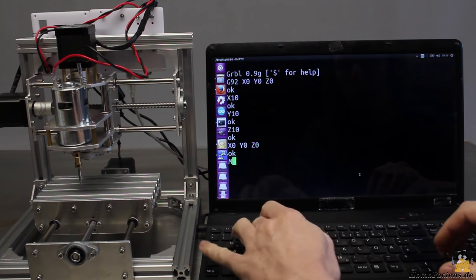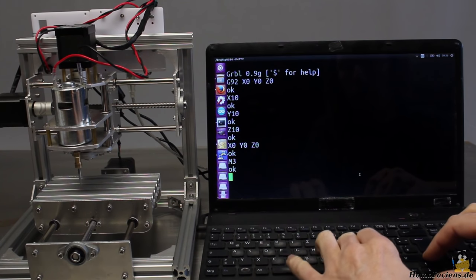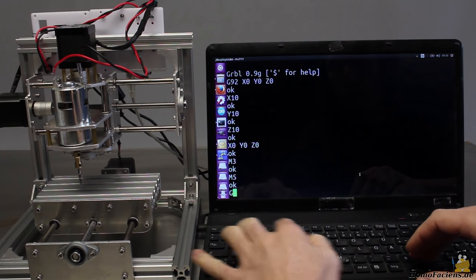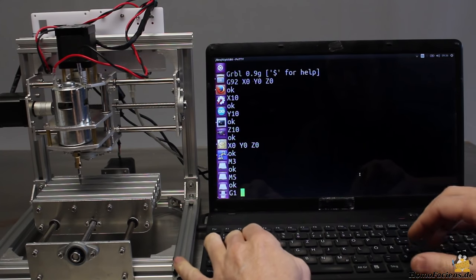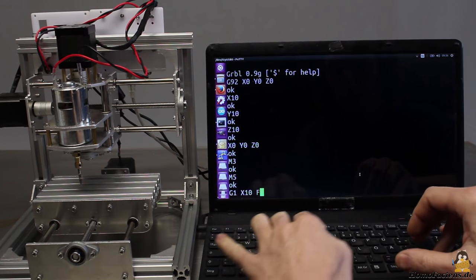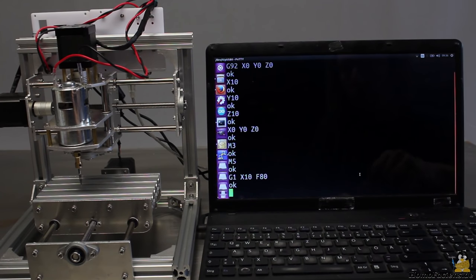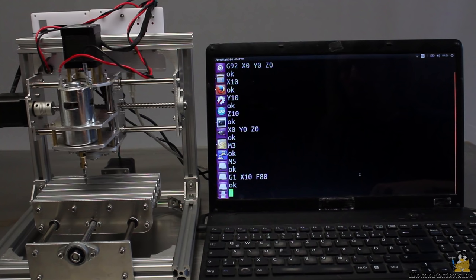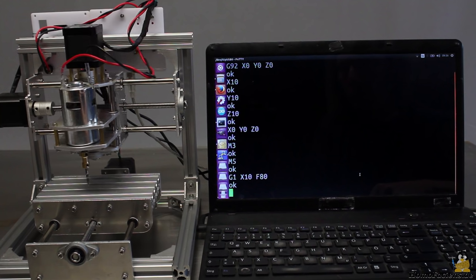M3 turns the milling motor on, M5 turns that motor off. The feed rate is encoded by an F followed by the speed in millimeters per minute. Here it is set to 80mm per minute and the X axis is commanded to move for 10mm with that feed rate.